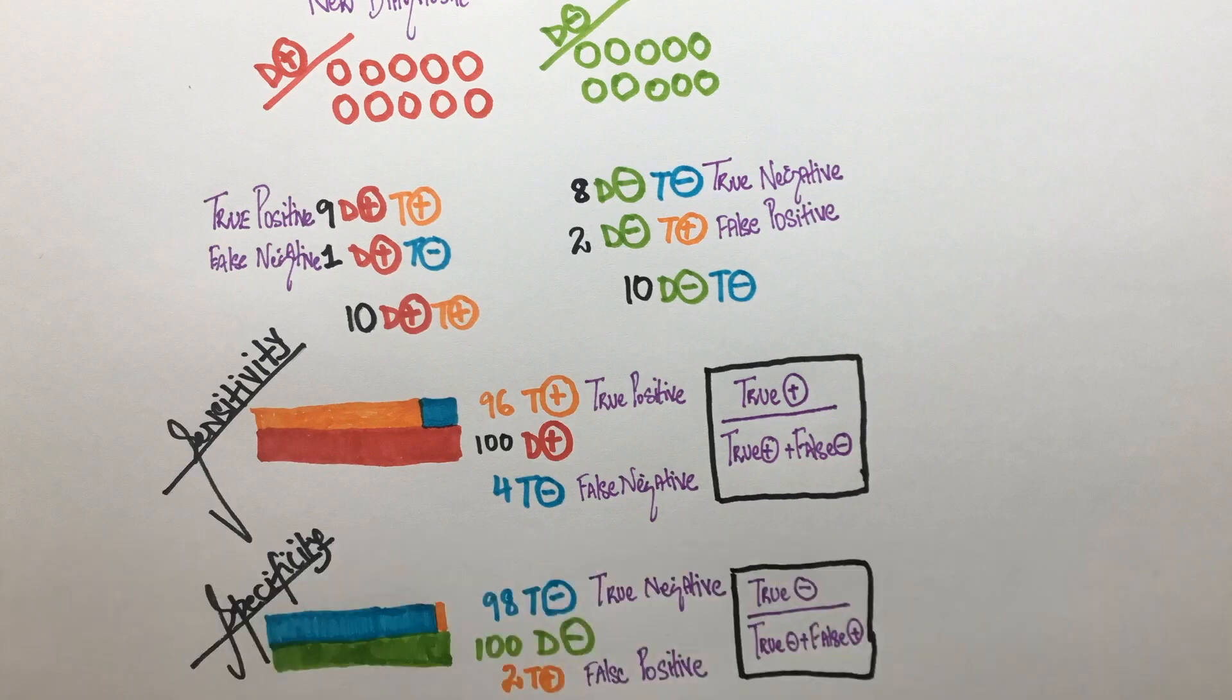So, sensitivity will have true positive as the numerator. Logically, specificity will have true negative as the numerator.